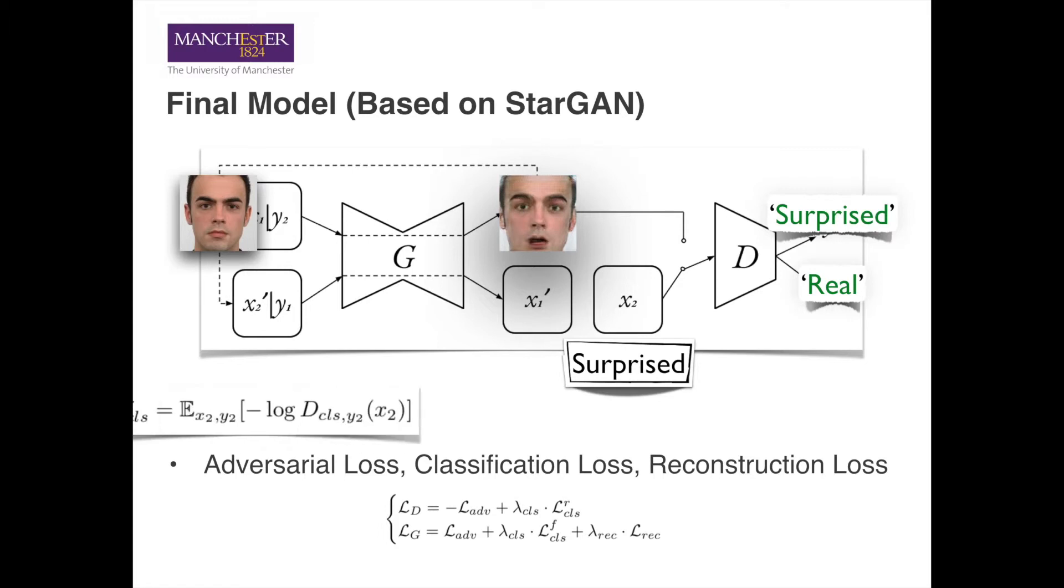By minimizing the difference between the classification results and the real labels of the image, also known as the classification loss, we can improve the accuracy of the discriminator for classifying real images.